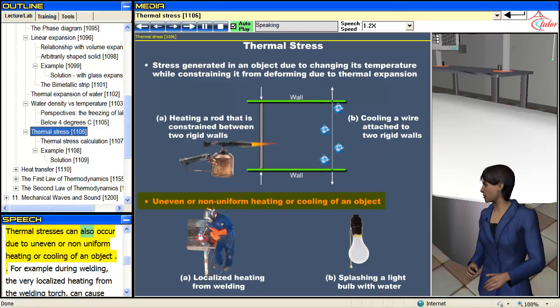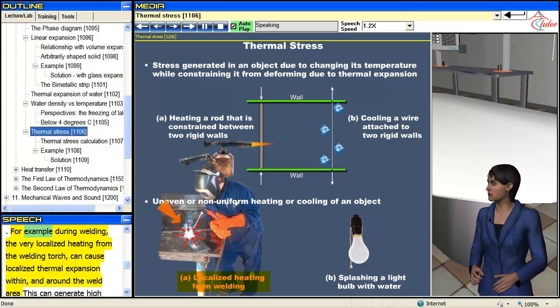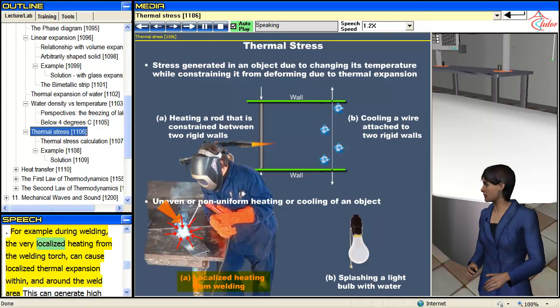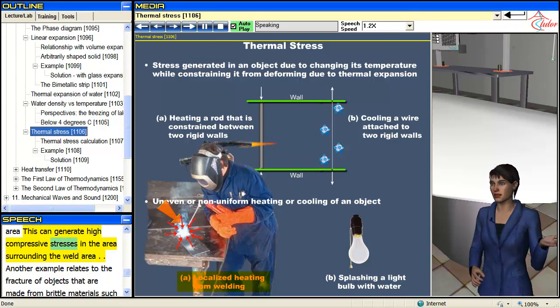Thermal stresses can also occur due to uneven or non-uniform heating or cooling of an object. For example, during welding, the very localized heating from a welding torch can cause localized thermal expansion within and around the weld area. This can generate high compressive stresses in the area surrounding the weld area.